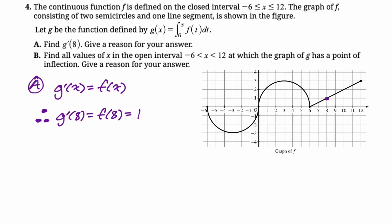I think that's enough reasoning. Maybe we'll find out later when they release things that they really wanted us to say by second fundamental theorem or something, but they never have in the past. Let's look at b. Find all values of x in the open interval at which the graph of g has a point of inflection. We have to give a reason for our answer.